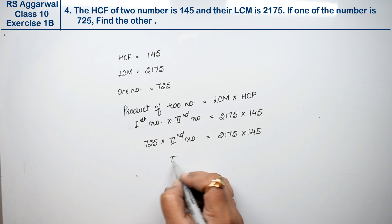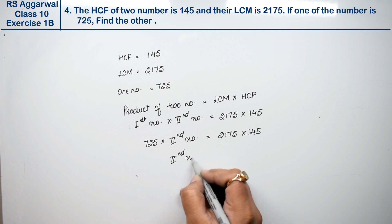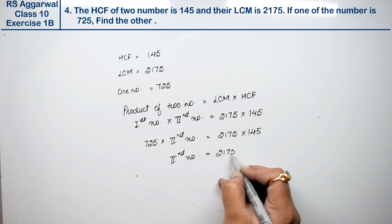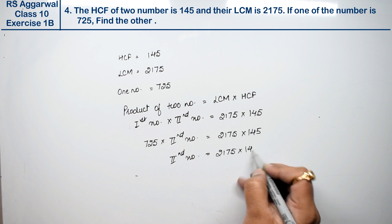The second number equals 2175 times 145 divided by 725.